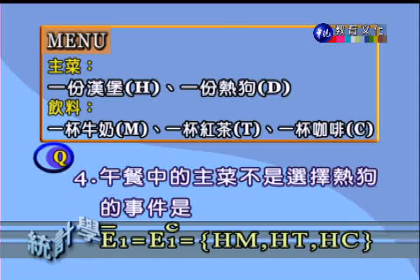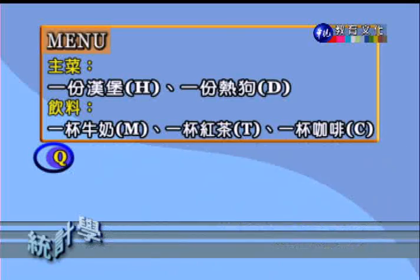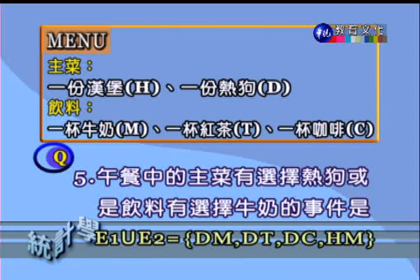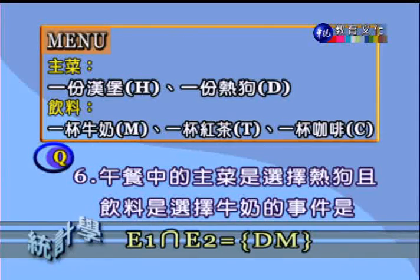若主菜不是熱狗的事件，則取 E1 的餘集，內容為 {HM, HT, HC}。若主菜有選熱狗或飲料有選牛奶的事件，則為 E1∪E2，內容為 {DM, DT, DC, HM}。若主菜是熱狗且飲料又是牛奶的事件，則為 E1∩E2，重疊部分內容只有 {DM} 這一個。